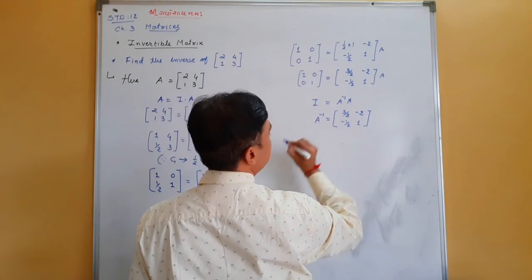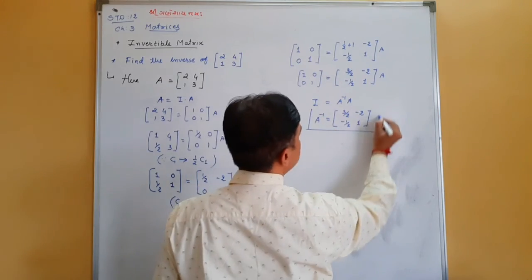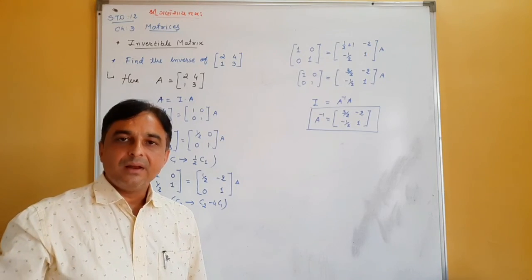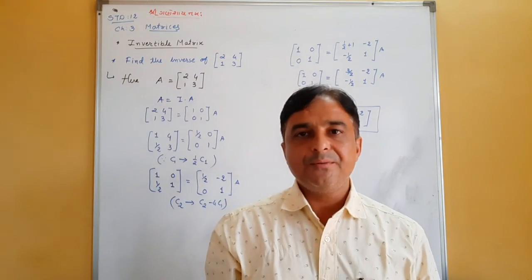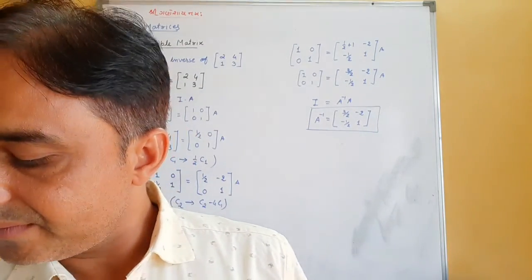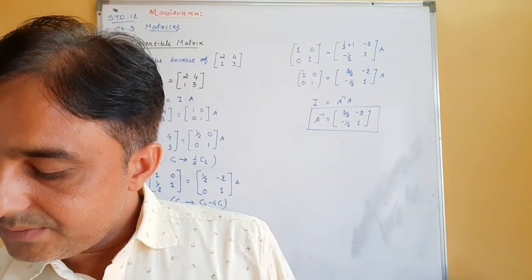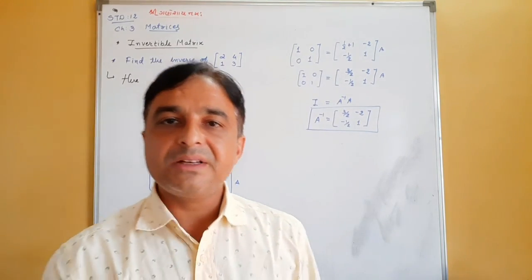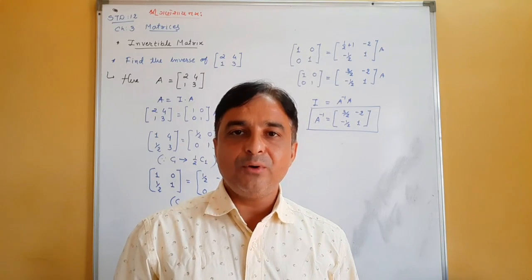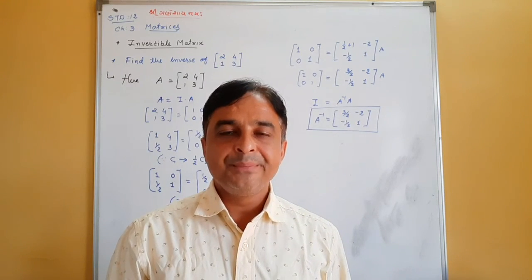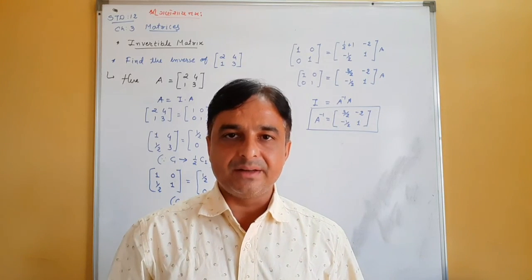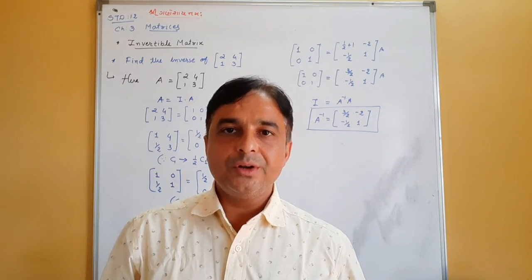So the inverse of matrix A equals [3/2,-2;-1/2,1], clear. Now you have to practice this type of example — exercise 3.4, questions 1 to 11. In the next lecture we will discuss the inverse of a 3 by 3 matrix. See you soon, bye bye.